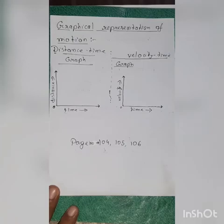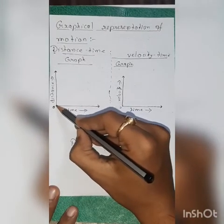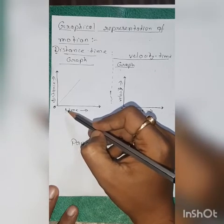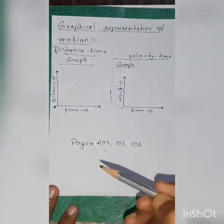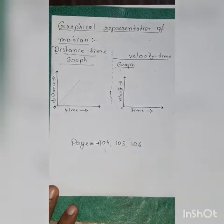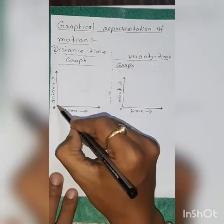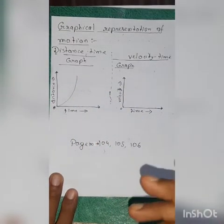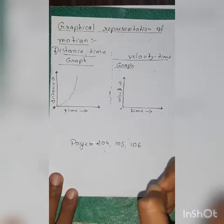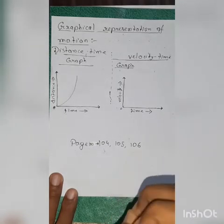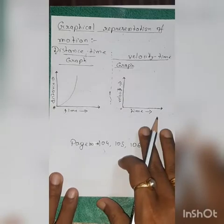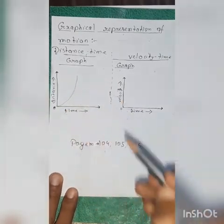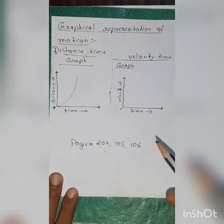Let us first start with the distance-time graph. If the distance-time graph is a straight line passing through the origin, it represents uniform motion — that means equal distances are travelled in equal intervals of time. If the distance-time graph is a curved line, it represents non-uniform motion — unequal distances are travelled in equal intervals of time or equal distances are travelled in unequal intervals of time. Always remember that the distance-time graph never points downwards since distance never decreases in case of a moving body.